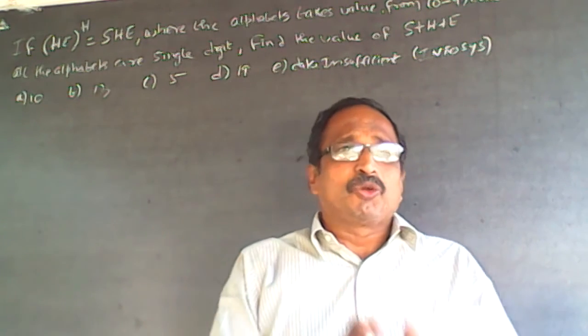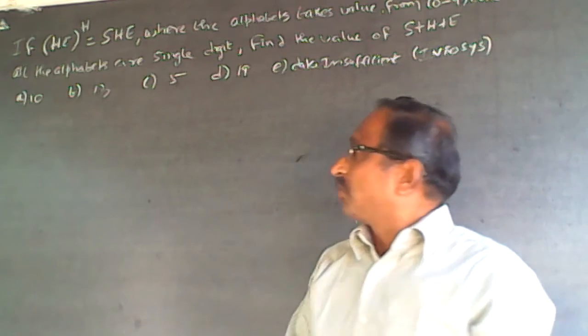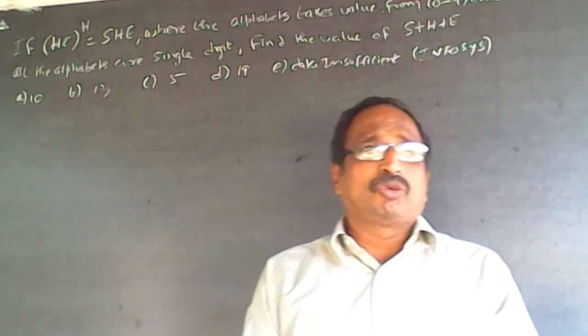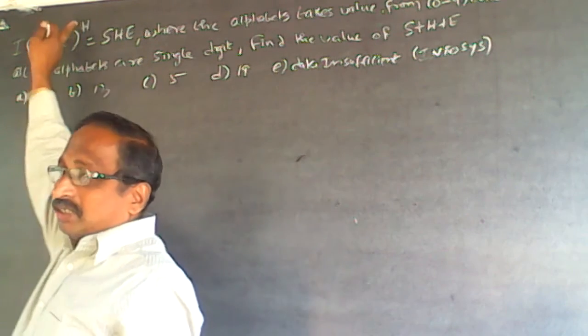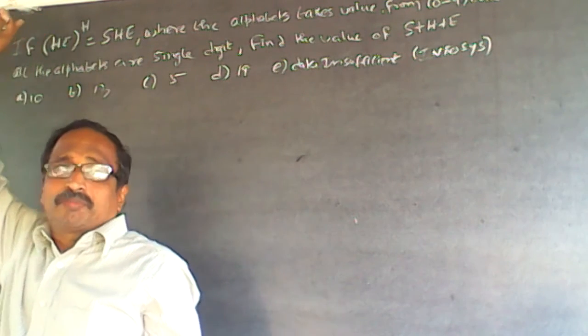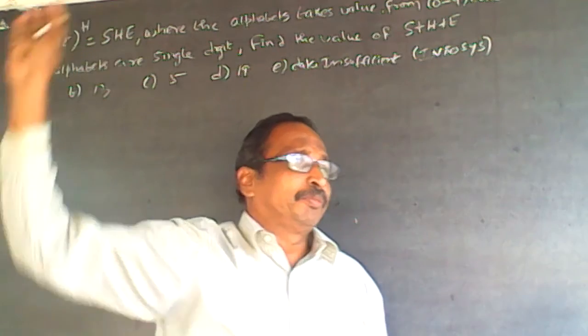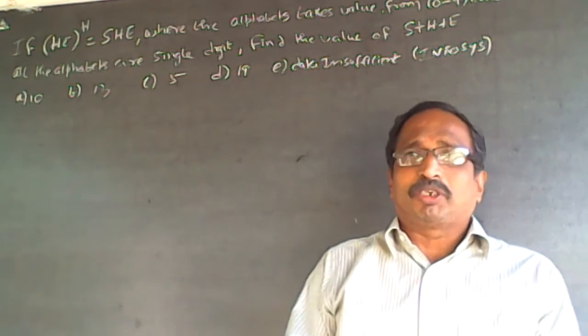See, what I understand is a two digit number CE, square is a three digit number SHC. I can't call this a square because it can be power 1 or power 2 or power 3 or anything is possible.